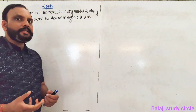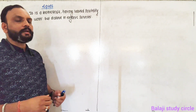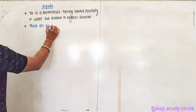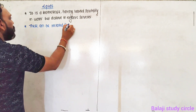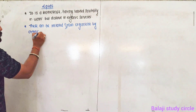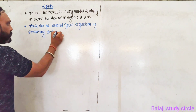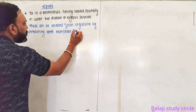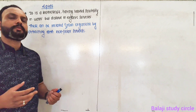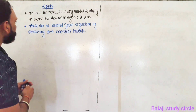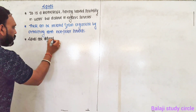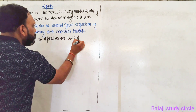Lipids can be extracted from organisms by using non-polar solvents. So these can be isolated from an organism by extracting with non-polar solvents. This is something we need to remember. Lipids are defined on the basis of their properties.